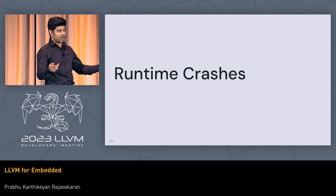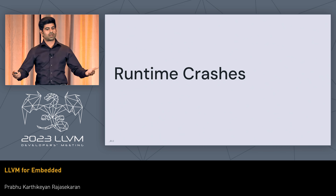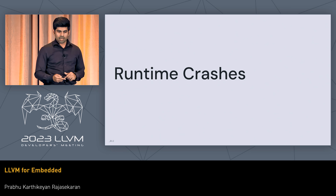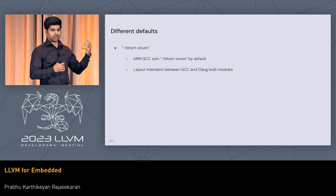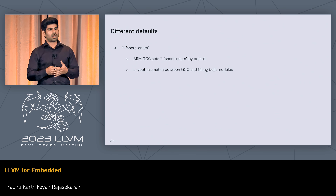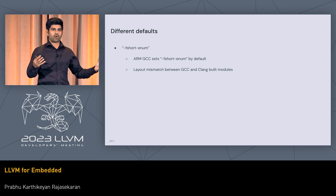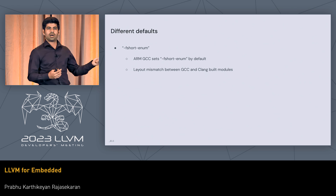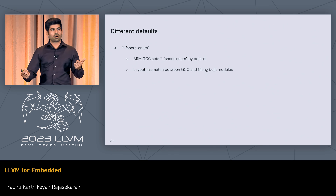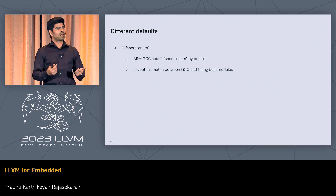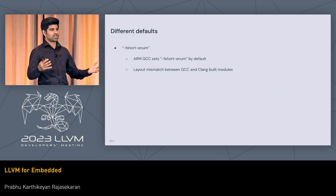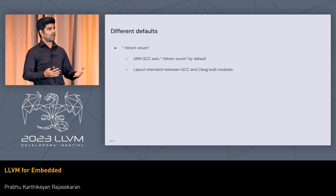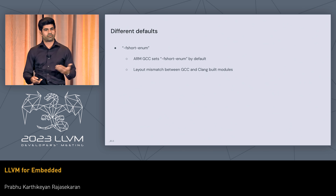Once we got things compiled, linked, and made it fit in memory, we tried to run the artifact on the device, which led to some runtime failures. The first class of failures: when we started transitioning, we first switched out one particular target in the product while other targets continued to use the GNU toolchain. When these toolchains had different defaults — for example, the short enum flag was set by ARM GCC but not the LLVM toolchain — and when these codebases started interacting and sharing data, there were layout mismatches in structs. The enums resulted in runtime failures. First identifying these defaults and making sure all toolchains in your ecosystem have the same behavior is the first step to getting past these failures.